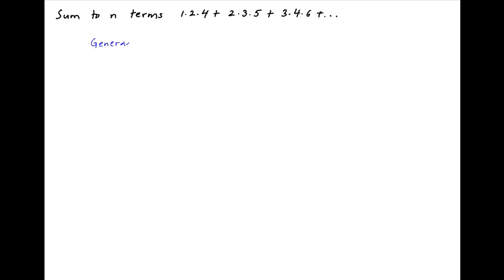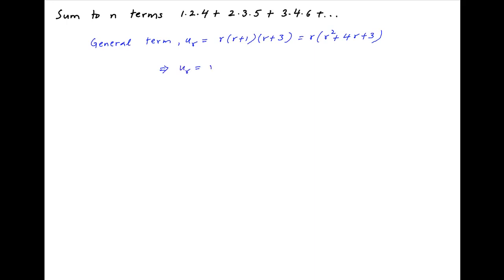The general term of the series, let's denote it by u_r, is equal to r times (r+1) times (r+3), which is equal to r times (r² + 4r + 3), and this is equal to r³ + 4r² + 3r.